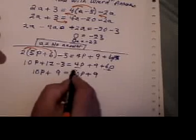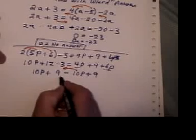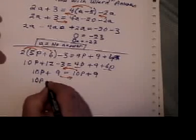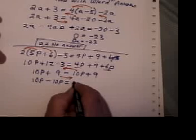Uh-oh. Something looks a bit weird already, doesn't it? Let's go cross-border shopping. Bring this 10P over and this plus 9 across. And let's write out what we have now. The border guard changes that to minus 10P. And over here I have 9. And the border guard changes this 9 to minus 9. So I have zero equals zero.